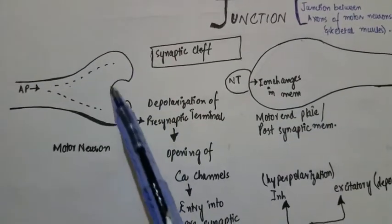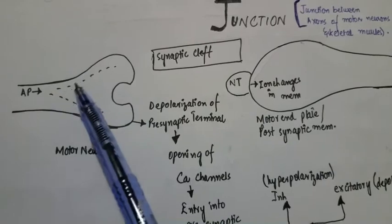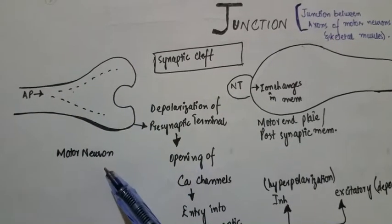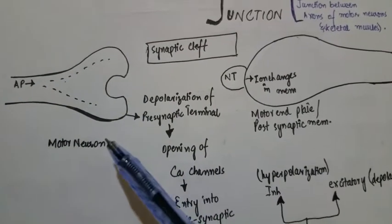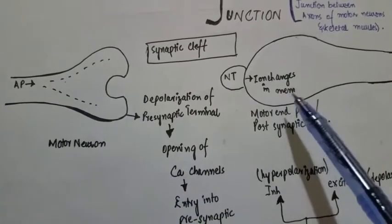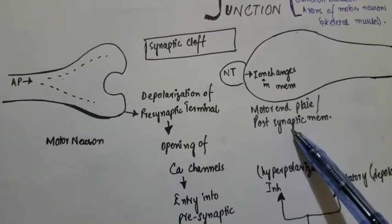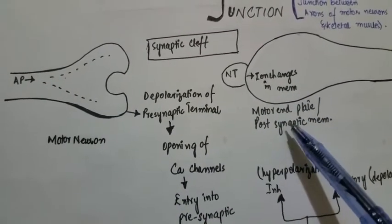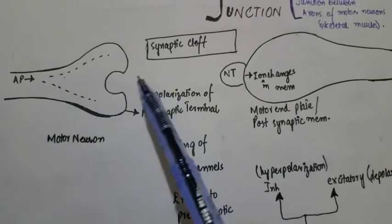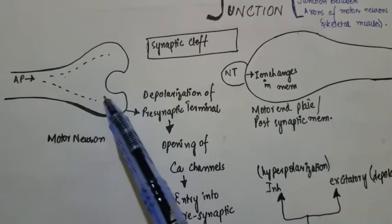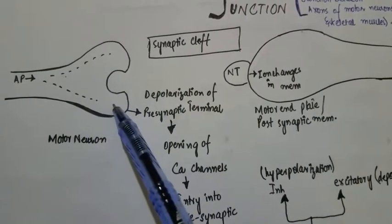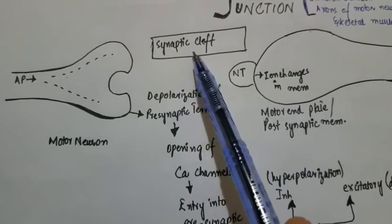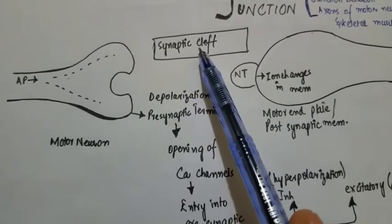This is the presynaptic neuron or the motor neuron which is going to depolarize the motor end plate or the postsynaptic membrane. The space between the presynaptic membrane and the postsynaptic membrane is known as the synaptic cleft.